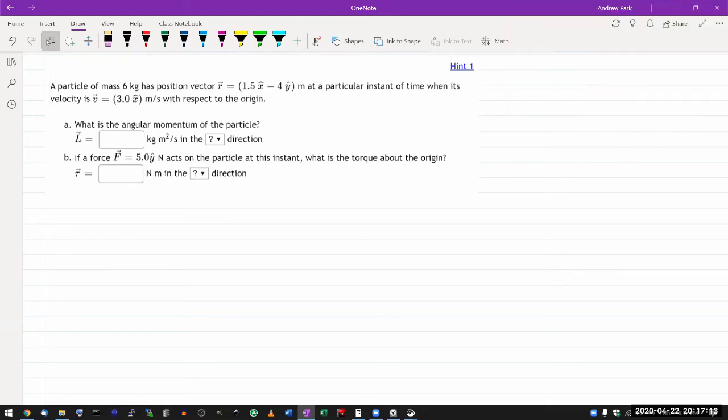Let me start here. It says a particle of mass, some mass, has some position vector r at a particular instance of time when its velocity is some value with respect to the origin.